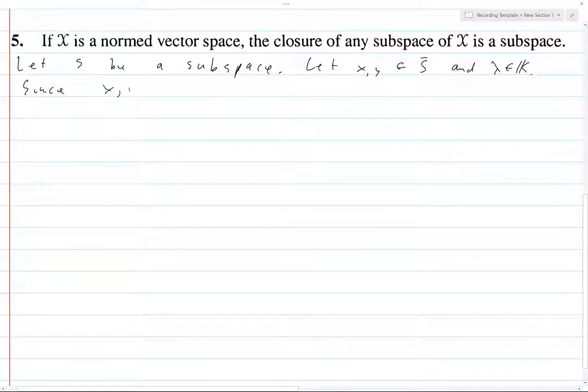Since x and y are in S closure, there are sequences x_n and y_n contained in S such that x_n goes to x and y_n goes to y.